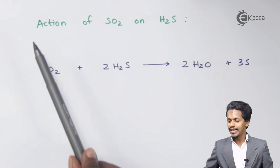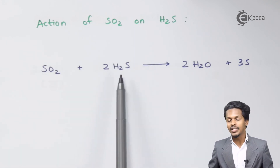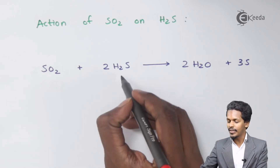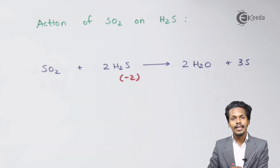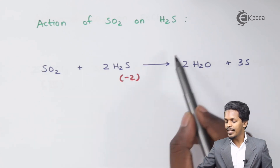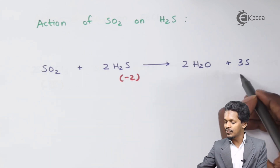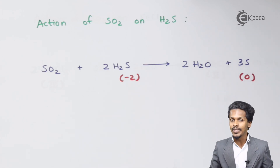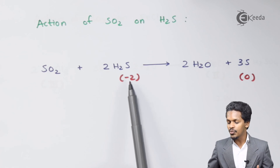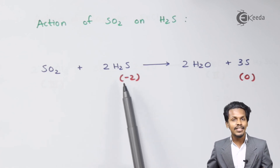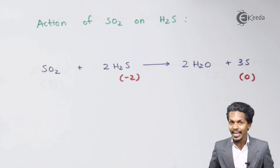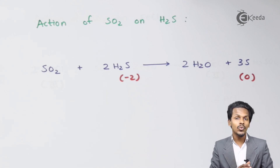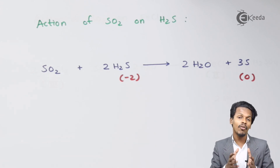The next is the action of SO2 on H2S. When sulfur dioxide is treated with hydrogen sulfide, the sulfur in H2S has an oxidation state of minus 2. The products are H2O and 3 moles of S, where sulfur has an oxidation state of 0. The sulfur is oxidized from minus 2 to 0, meaning here SO2 is acting as an oxidizing agent. So SO2 can act as both a reducing agent and an oxidizing agent depending on the reactant and conditions.